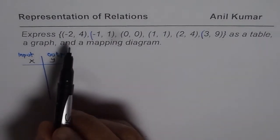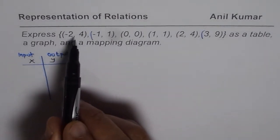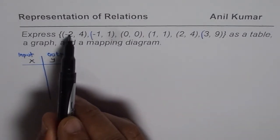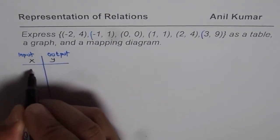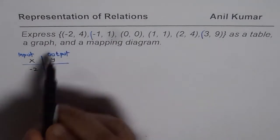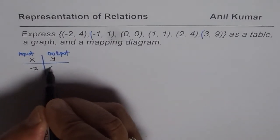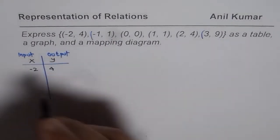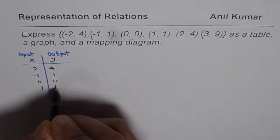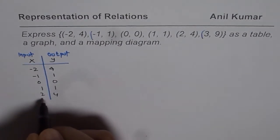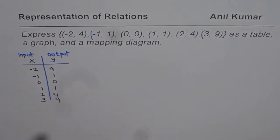In our case, the ordered pairs are points on the coordinate system where the first value represents x and the second represents y. So minus two is mapped to four, minus one is related with one, zero with zero, one with one, two with four, and three with nine. That is the representation of the set of ordered pairs in the form of a table.